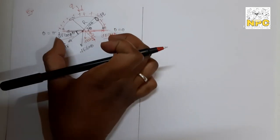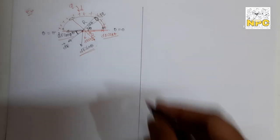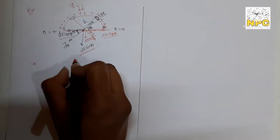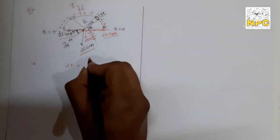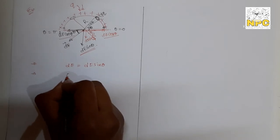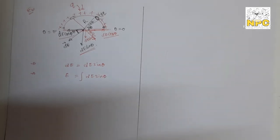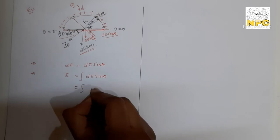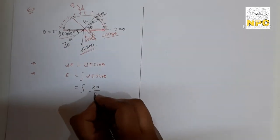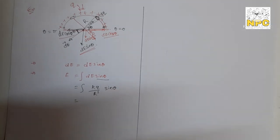The cos θ components cancel due to the diametrically opposite or mirror-image symmetry. Only the sin θ component remains: dE·sinθ. So the net electric field at the center comes only from the dE·sinθ component of each segment. Therefore total E = ∫dE·sinθ.